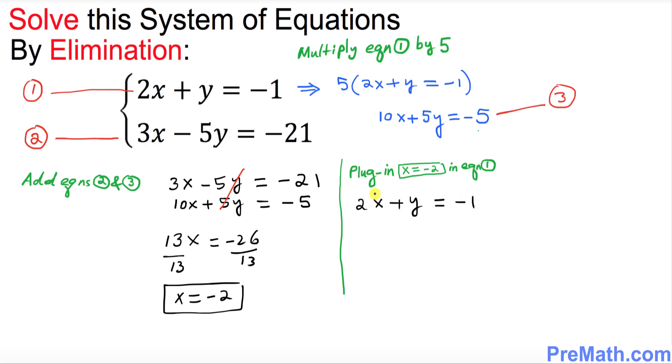And here you see this value I'm going to replace x by negative 2 so this is going to become two times negative 2 and then plus y equals negative 1.